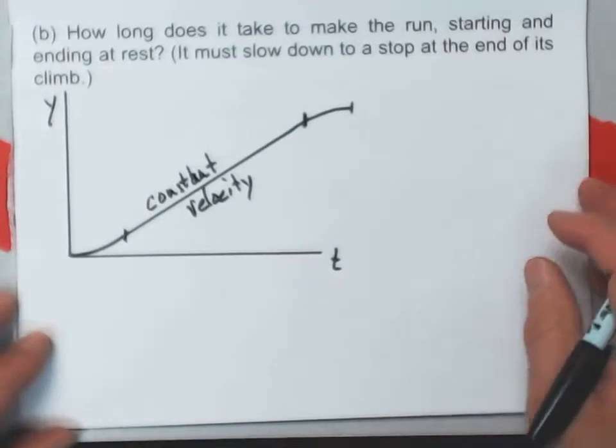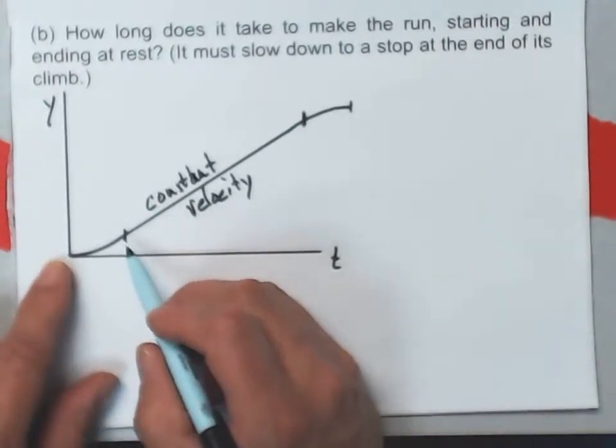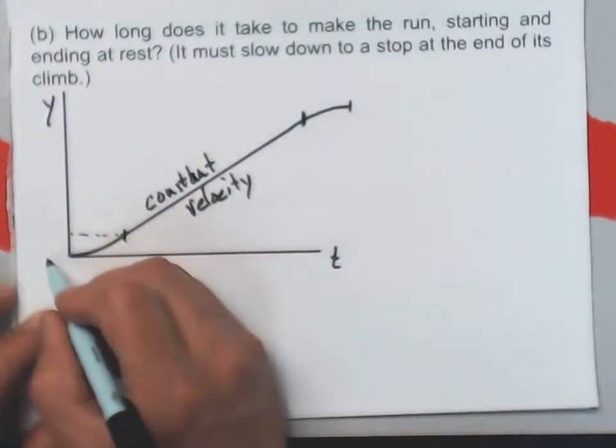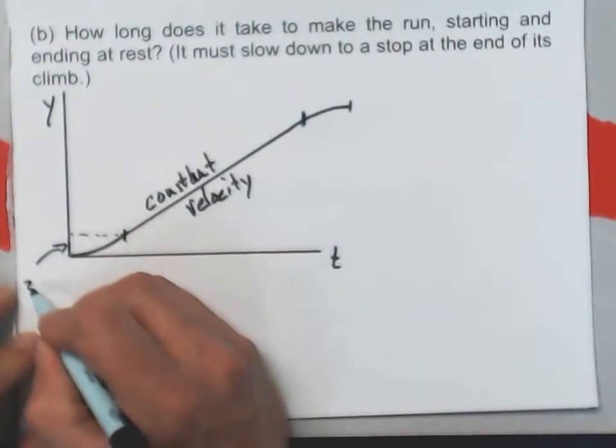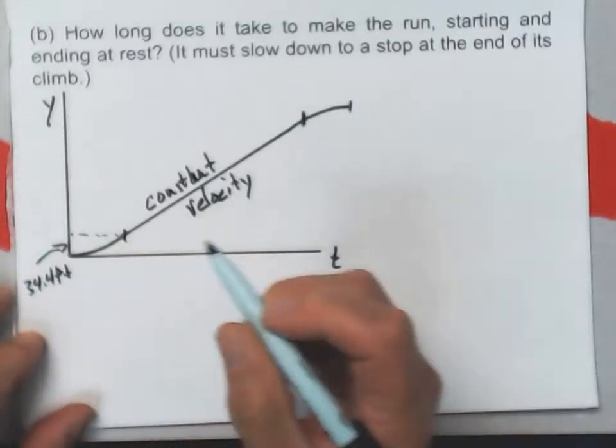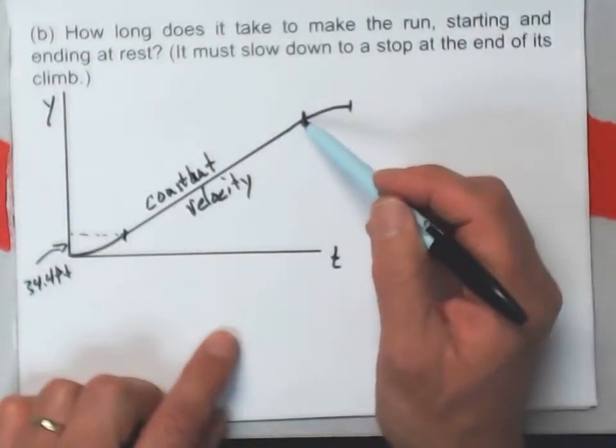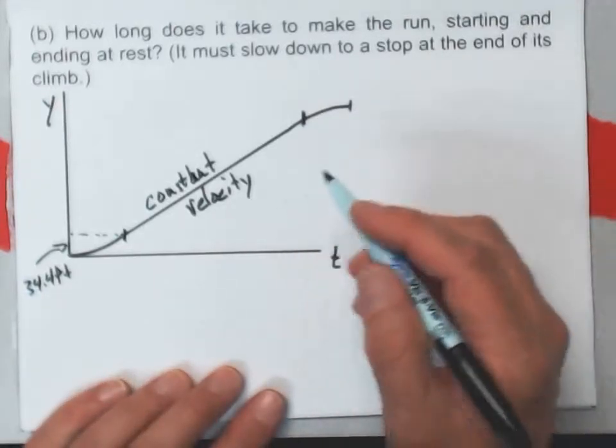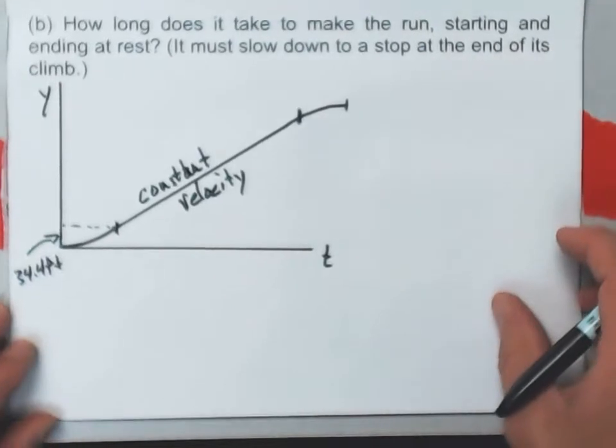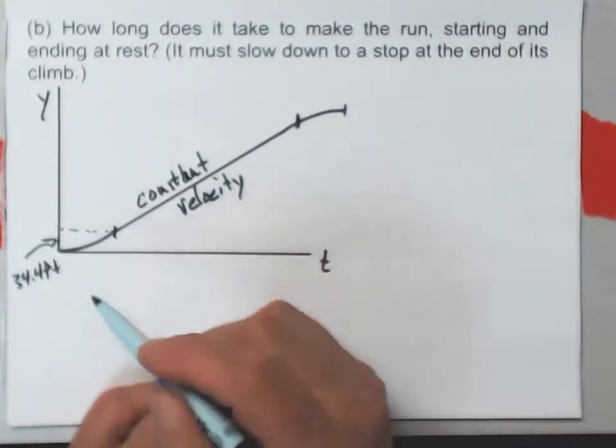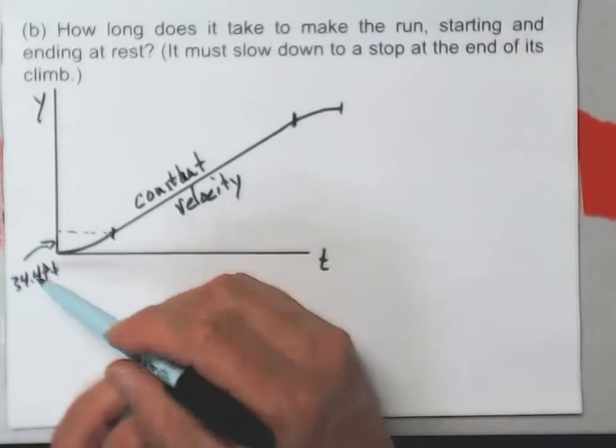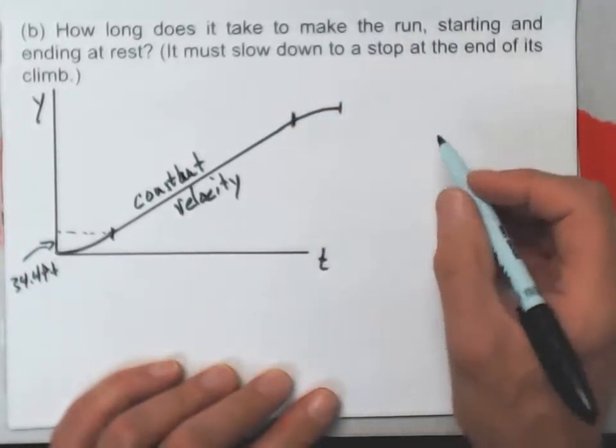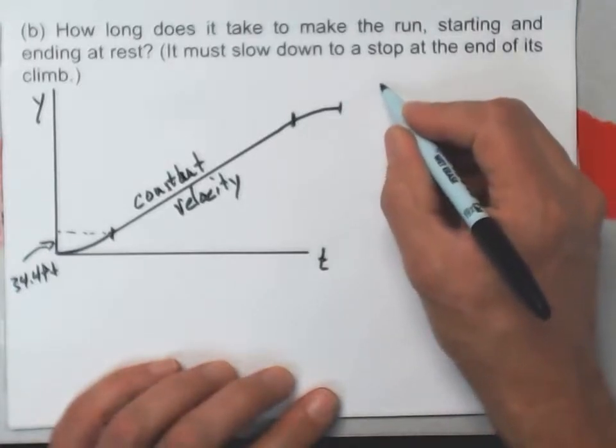There's a span of time here where it's decelerating or slowing down from that maximum velocity down to zero. And I say that these two time periods are going to be exactly the same. And I can show you that here. And then we've got the constant velocity part here. So let's see how this thing works out.